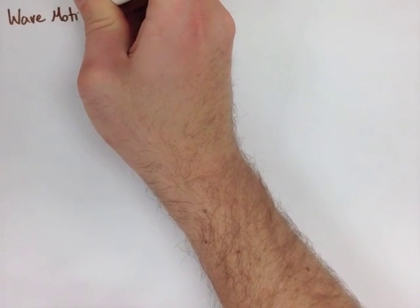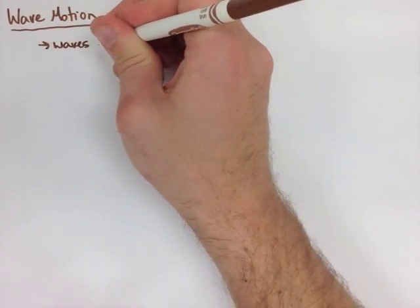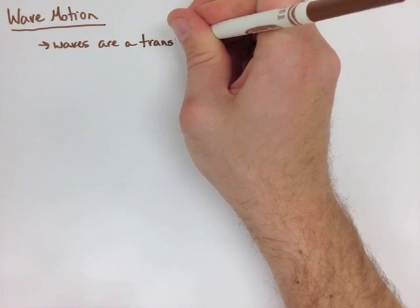The next thing we're going to look at is the motion of a wave. We're going to draw a transverse wave for this because it's the easiest to describe.